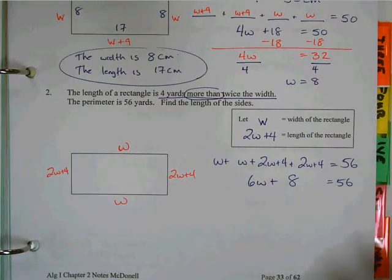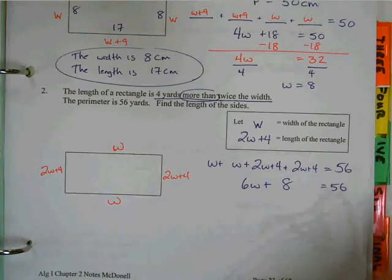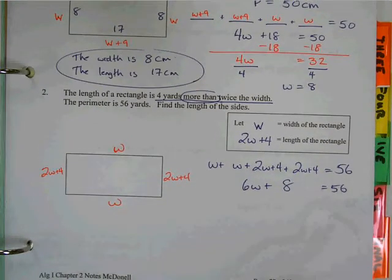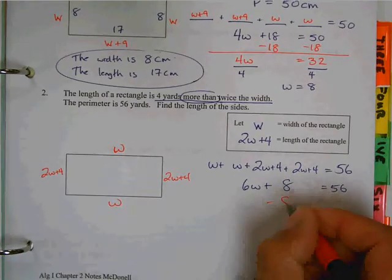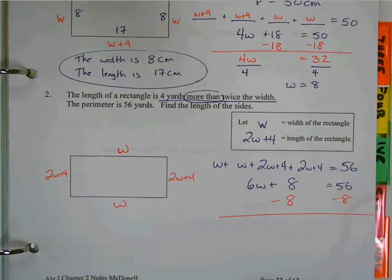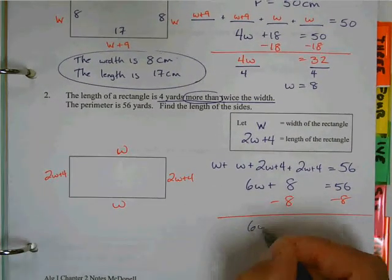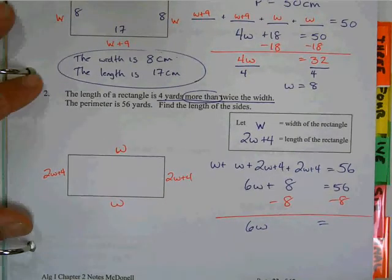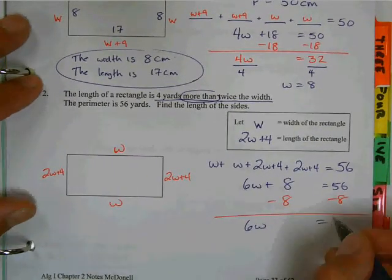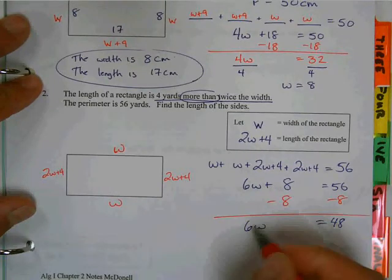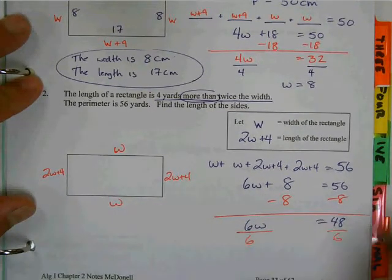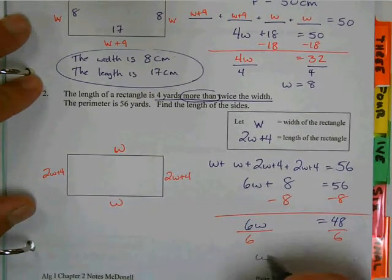Solving from there. What to both sides? Subtract 8. Subtract 8. That leaves me with 6W. Help me with subtraction. 48. Divide by 6. Someone divide for me. 8.